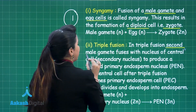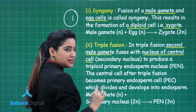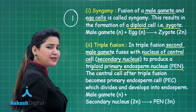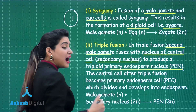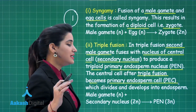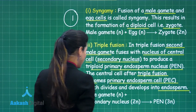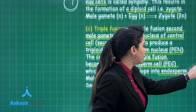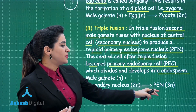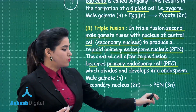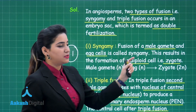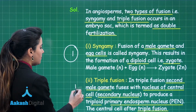In triple fusion, the second male gamete fuses with the nucleus of the central cell, also known as the secondary nucleus, to produce a triploid primary endosperm nucleus, shortly known as PEN. The central cell after triple fusion becomes the primary endospermic cell, shortly called PEC, which divides and develops later on into endosperm. Here the male gamete (haploid) fuses with the secondary nucleus (diploid) to form PEN with ploidy of 3N, and for this you will score one mark.